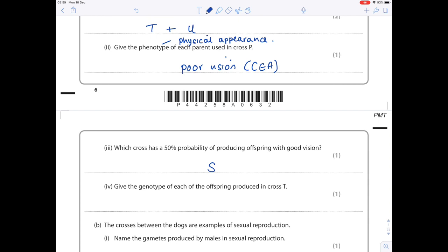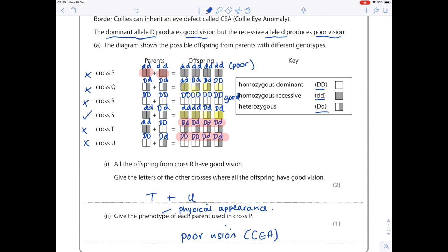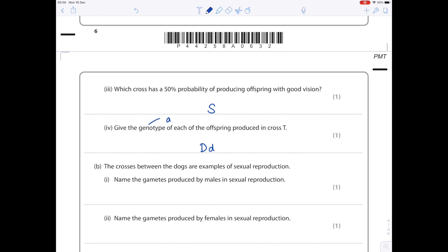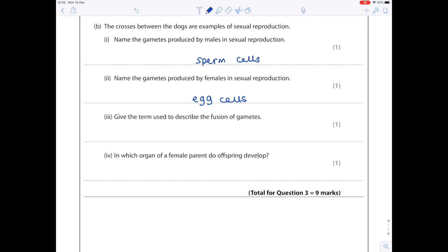Give the genotype of each of the offspring produced in cross T. Well, genotype is what alleles they have, so I've already done that - it's big D small d. Remember, genotype we need alleles, phenotype is the physical appearance. The crosses between the dogs are examples of sexual reproduction. Name the gametes produced by males in sexual reproduction. Thank goodness we're getting more chill with this question. A gamete is a sex cell, so the name of the male sex cell is the sperm. Likewise, name the gametes produced by females - those are the egg cells. Give the term used to describe fusion of gametes, so what happens when that sperm hits the egg. Well, it's known as fertilization.